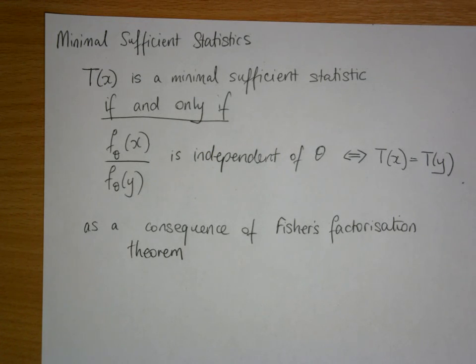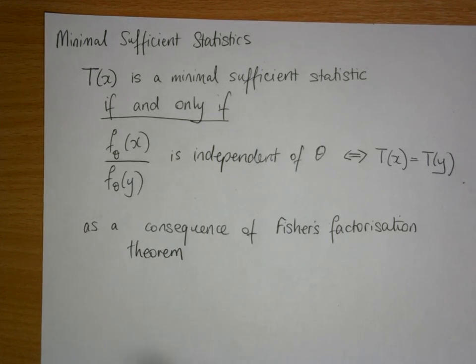In this example on finding minimal sufficient statistics, we're going to be looking at the binomial distribution. But first we recall that as a consequence of Fisher's factorization theorem,